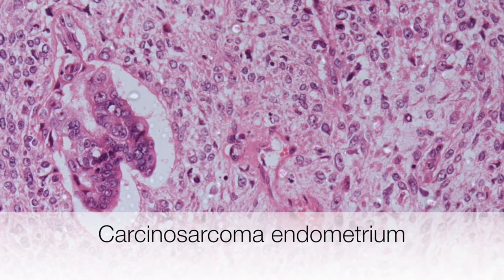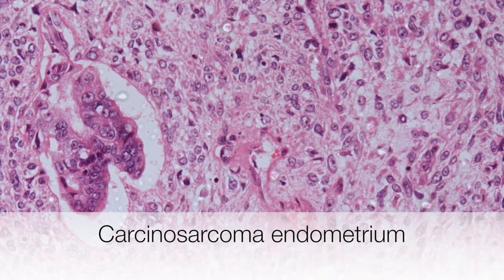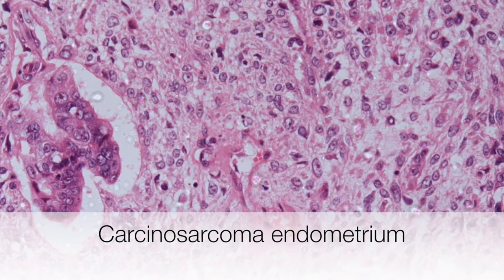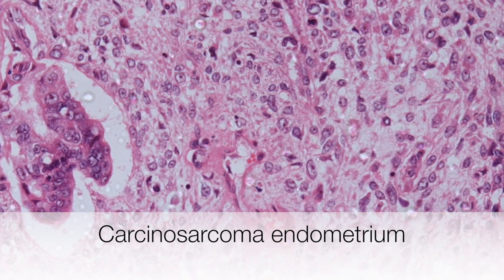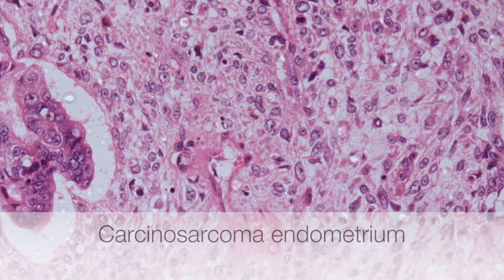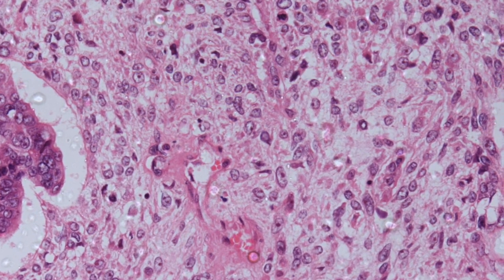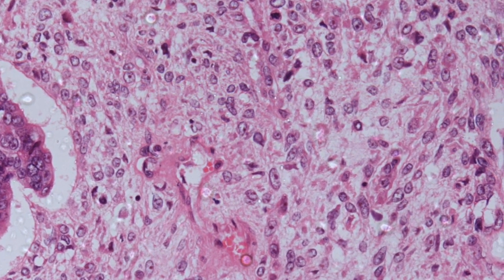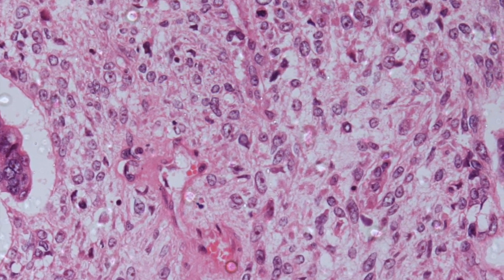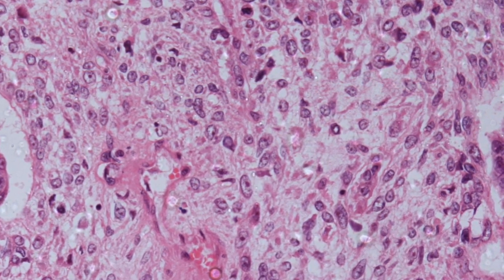This is an example of a carcinosarcoma of the endometrium, so-called because it has malignant glandular components — you can see a malignant gland on the left of the picture — and this lies in an area of sarcoma characterised by malignant spindle cells.